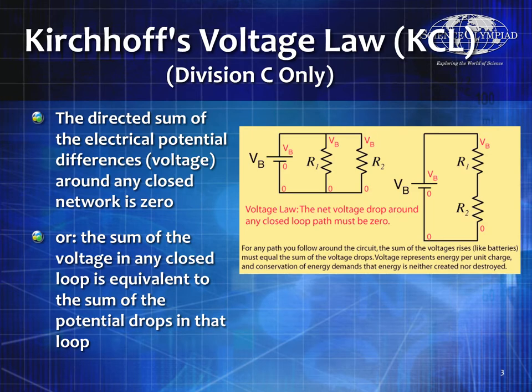Kirchhoff's Voltage Law. Remember, this is for division C only but it's useful for division B. The directed sum of the electric potential differences around any closed network is zero. Basically, the sum of voltages in any closed loop is equivalent to the sum of the potential drops in that loop. If I go all the way around from one point back to that same point and add up all the voltages, it will equal zero no matter how many loops.